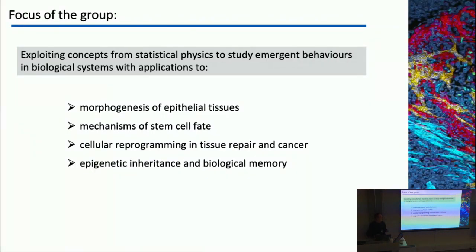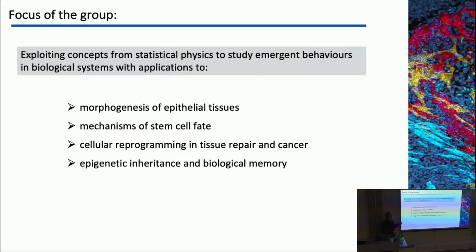What we're all about as a lab, just a few phrases. I'm coming from physics. I now have a mixed lab — we do some animal work, we have some theorists. Our angle, like many people here, is that we try to bring concepts and ideas from statistical physics and emergent phenomena to try to build minimal models of biological systems.